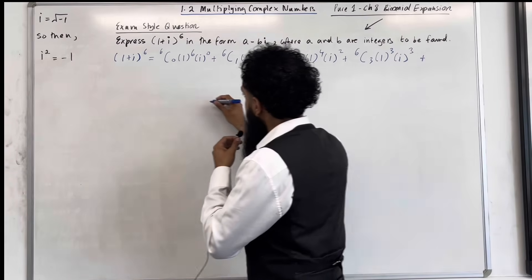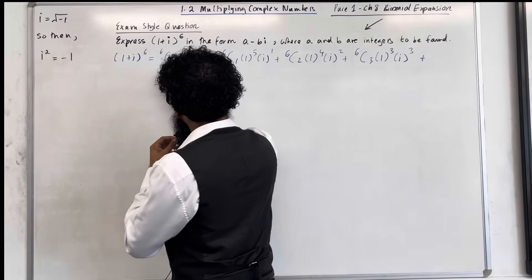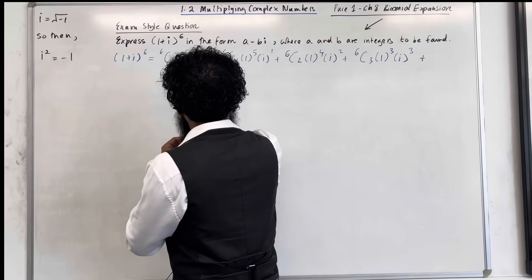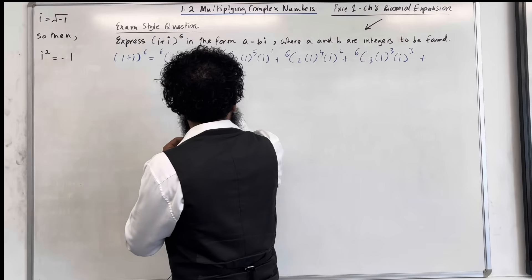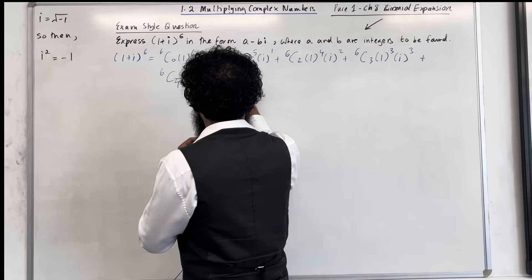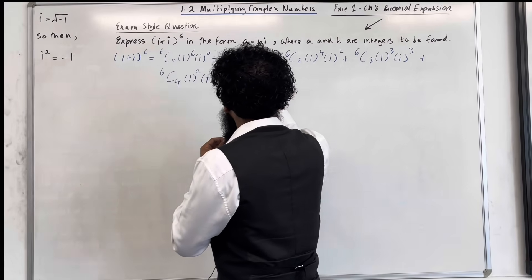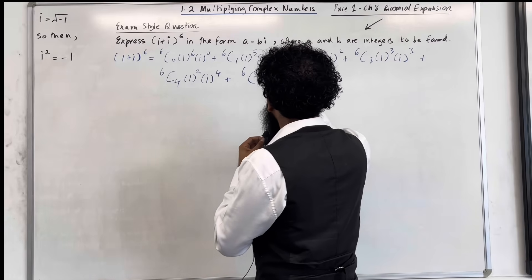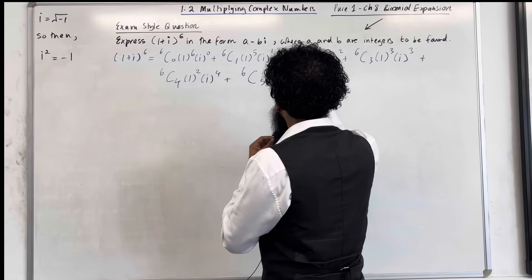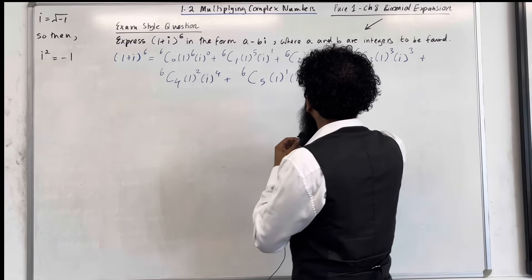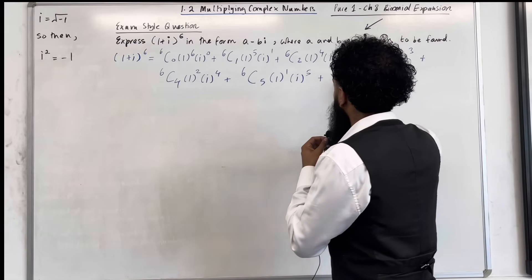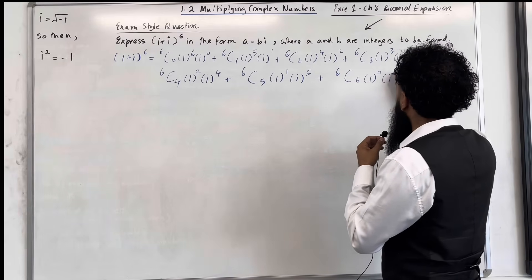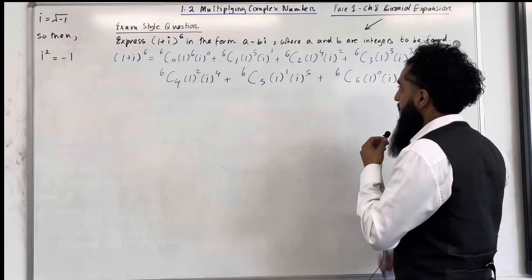Plus 6 choose 4 times 1 to the power 2 times i to the power 4, plus 6 choose 5 times 1 to the power 1 times i to the power 5, plus 6 choose 6 times 1 to the power 0 times i to the power 6.